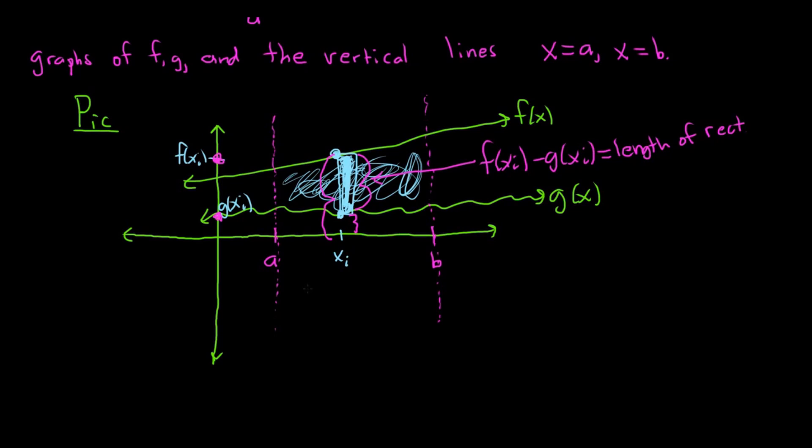Just as a side note, you could do this horizontally with functions of y. And in that case, it would be right minus left. But whenever it's functions of x, it's top minus bottom. Functions of y, right minus left. So here we have functions of x, so top minus bottom. And then you can think of the width of the rectangle as delta x.